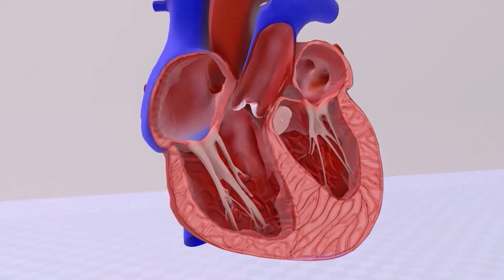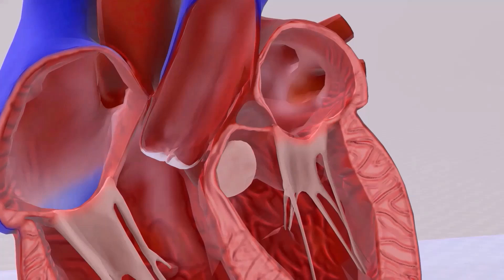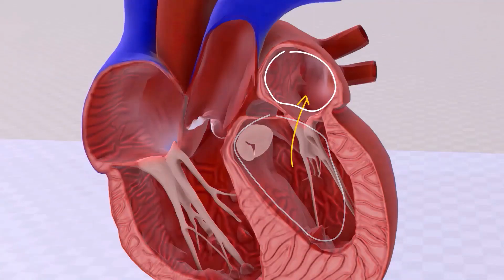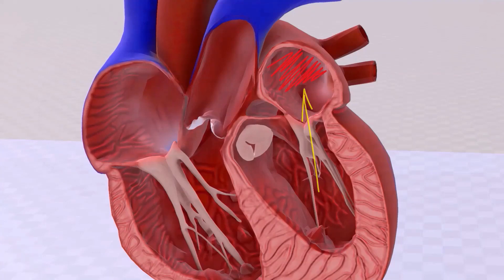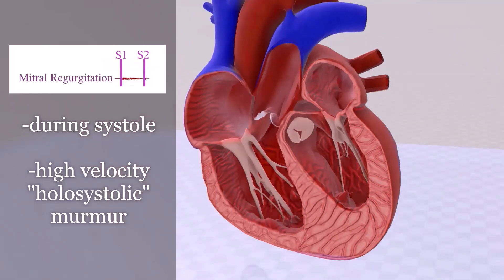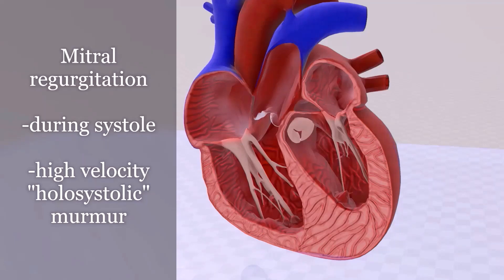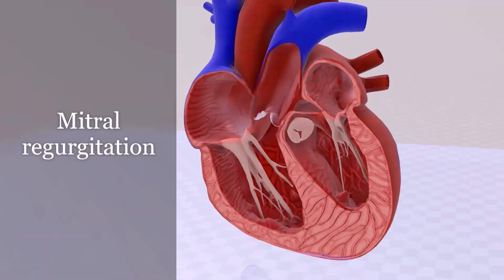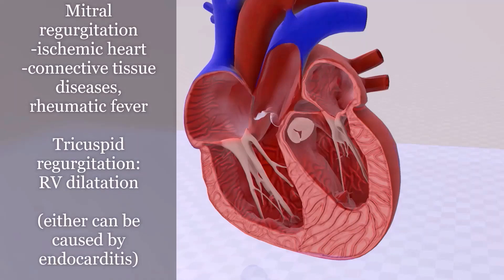In mitral regurgitation, the mitral valve fails to stay closed, causing blood to flow back from the left ventricle to the left atrium during contraction — a systolic problem. It is described as a holosystolic murmur heard best at the apex. Causes include ischemic heart disease, connective tissue diseases such as Marfan syndrome or Ehlers-Danlos syndrome, and rheumatic fever. In tricuspid regurgitation, the murmur is loudest at the tricuspid area.